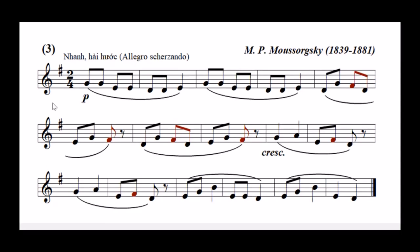Trong đoạn nhạc thực hành xướng âm thứ ba này, chúng ta cũng thấy ở dấu hóa biểu có một dấu thăng. Nhưng điều đặc biệt là nốt cuối cùng của đoạn không phải nốt son mà là nốt rê. Tuy nhiên đây cũng là giọng son trưởng, nhưng nốt rê chính là bậc 5 của son, tức là không kết ở bậc 1 mà kết ở bậc 5. Vấn đề đặc biệt thứ hai là chúng ta gặp ký hiệu P là viết tắt của piano, có nghĩa là cường độ đọc nhỏ nhẹ. Ký hiệu Cresc. viết tắt của chữ Crescendo có nghĩa là lớn dần. Điểm đặc biệt thứ ba là các dấu legato báo hiệu cho chúng ta đọc liền tiếng các nốt nhạc từng nhóm với nhau. Và điểm cuối cùng, tác giả ghi là nhanh hài hước, vì thế chúng ta cũng lưu ý tính chất hài hước trong đoạn xướng âm này.